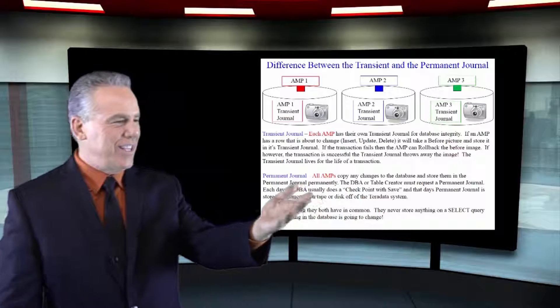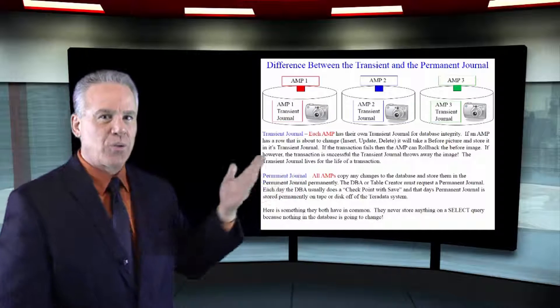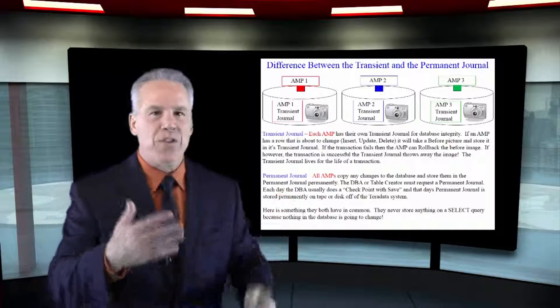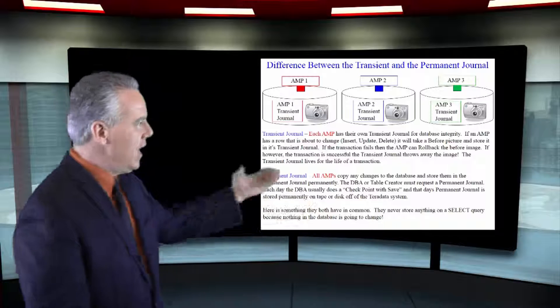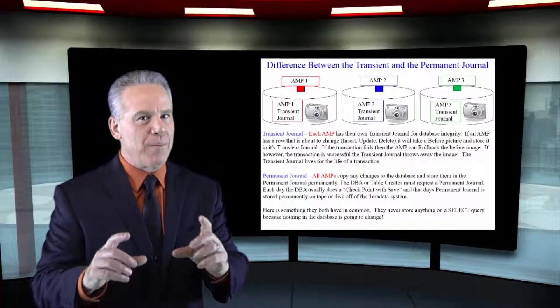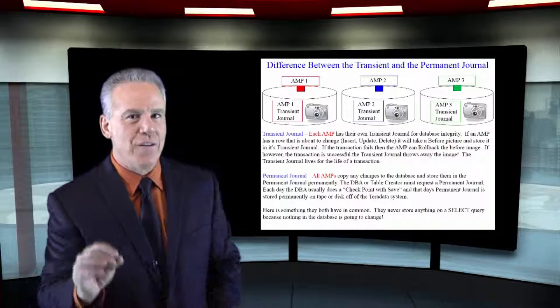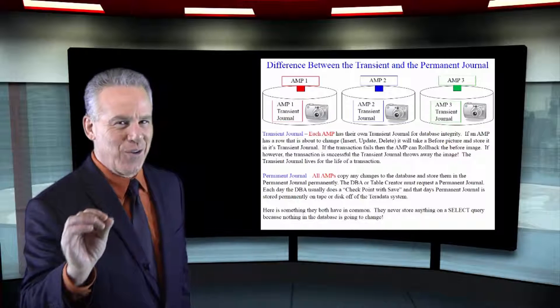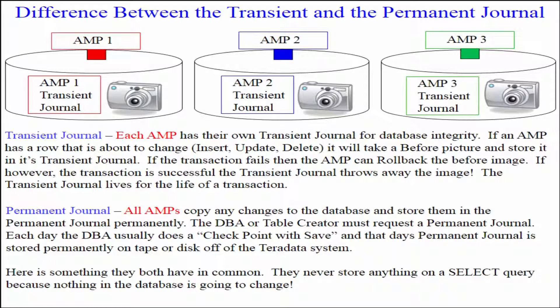Here you can see that we're going to talk about the differences between the transient journal and the permanent journal. Each amp has their own camera to take a before picture for their transient journal so they can roll a transaction back. It is transient because they will never keep that picture permanently.